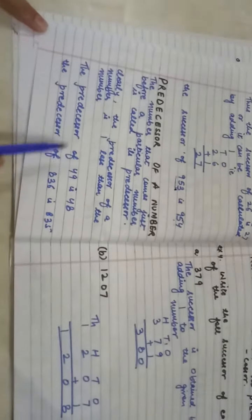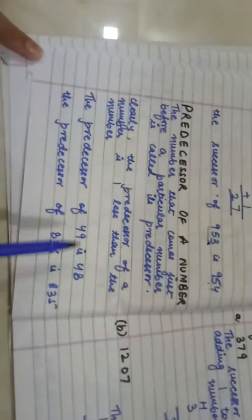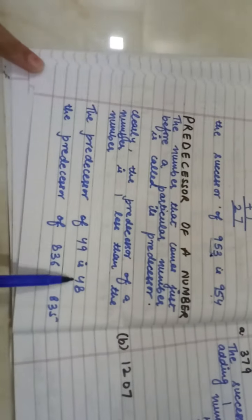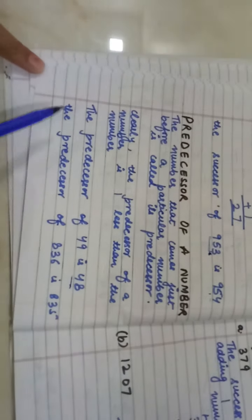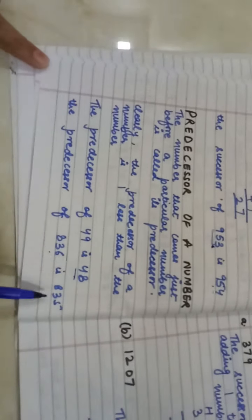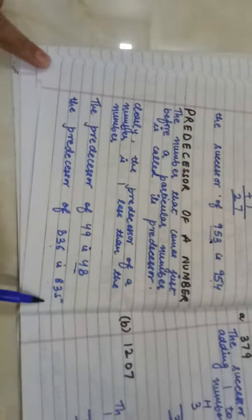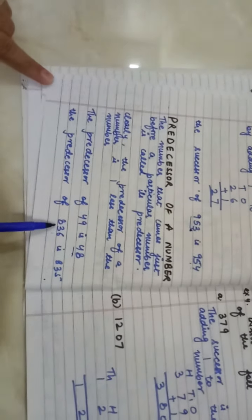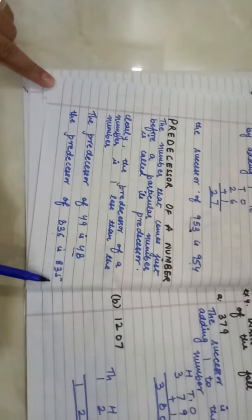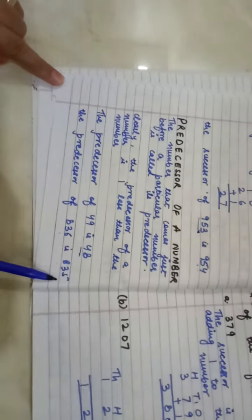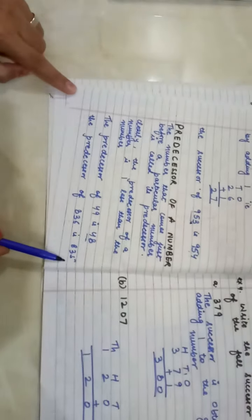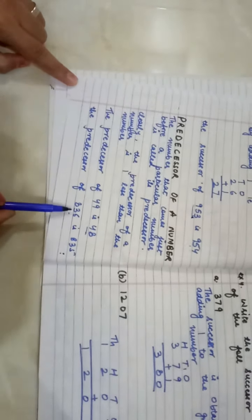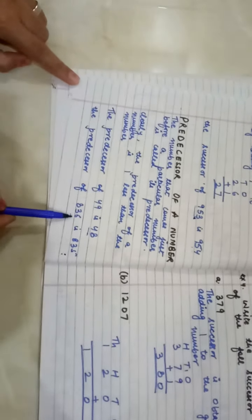The predecessor of 49 is 48. What comes before 49? That is 48. The predecessor of 836 is 835. What comes before 836? That is 835. Or we can also find it out by subtracting 1 from 836.